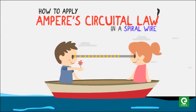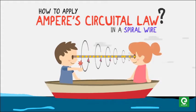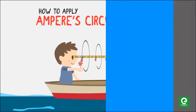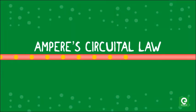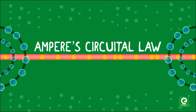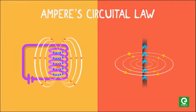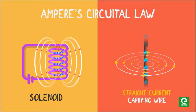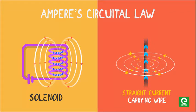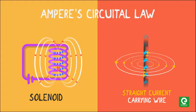How to apply Ampere's Circuital Law in a spiral wire. Ampere's Circuital Law is useful in finding the magnetic field due to current under certain conditions of symmetry.